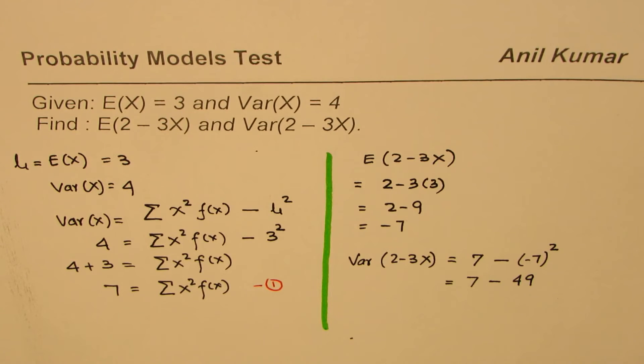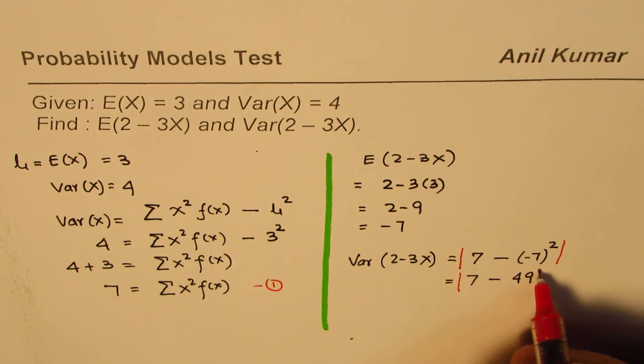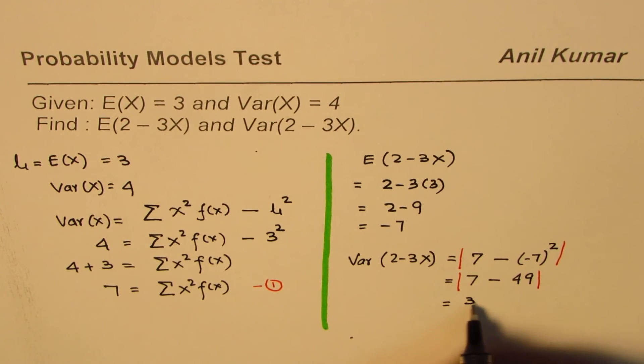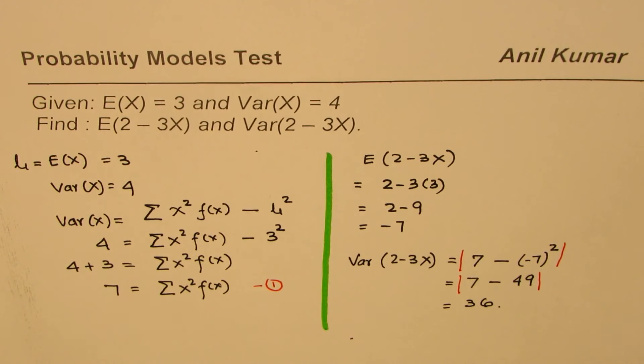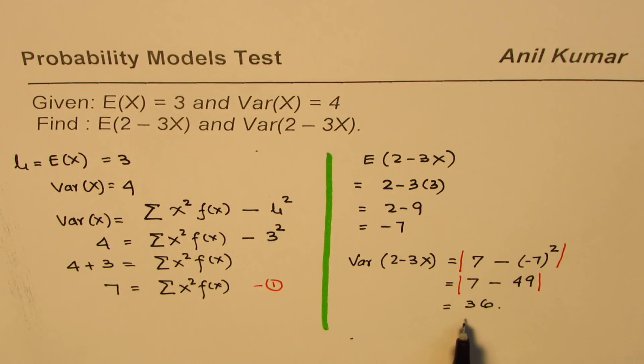And always when you find the variance, it could be plus or minus, but variance we take as a positive quantity. So we will take absolute value of this. So that is equal to 36.